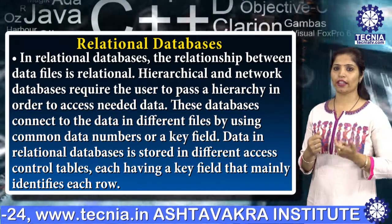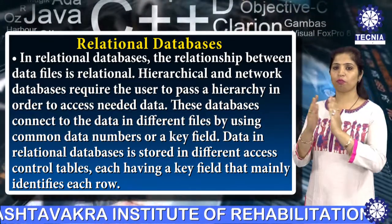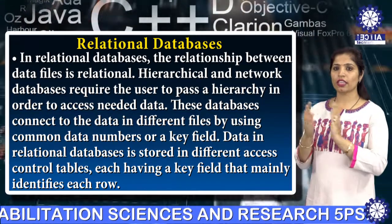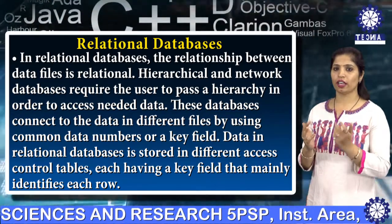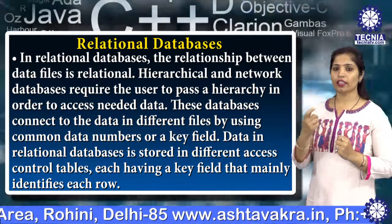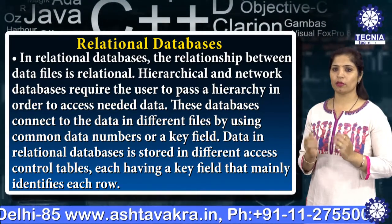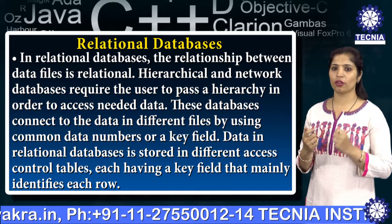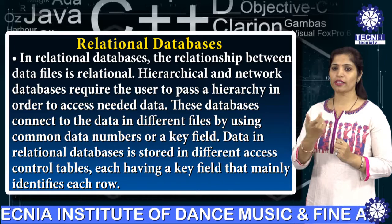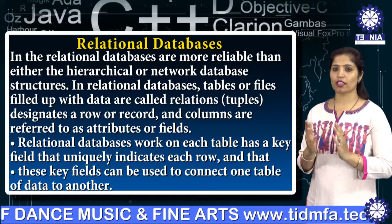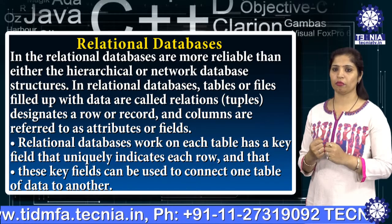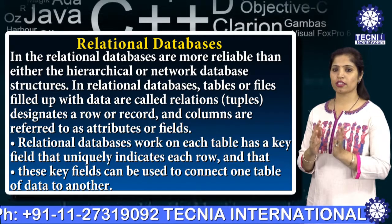The next database type is the relational database. In a relational database, the relationship between data files is relational. Unlike hierarchical and network databases, which require the user to pass through a hierarchy to access needed data, relational databases link different files by using common data numbers or key fields. Data in the relational database is stored in separate tables, each having a key field that identifies each row.